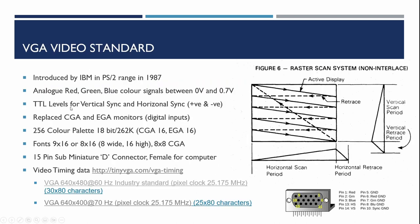The VGA video standard was introduced by IBM in the PS/2 range in 1987, so around the time the first 6809 computers came out in the early 80s this standard didn't exist. It uses analog red, green, and blue color signals between 0 volts and 0.7 volts, and uses TTL levels for the vertical and horizontal sync signals. These sync signals can be positive or negative — effectively inverted or not — and the monitor's operating frequency is determined by which polarity is used.